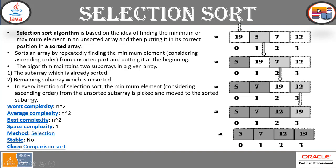Selection sort algorithm is based on the idea of finding the minimum or maximum element in an unsorted array and then putting it in its correct position in a sorted array. As you can see in this picture, we have an array of unsorted elements: 19, 5, 7, 12, and the pointer is the selection pointer.